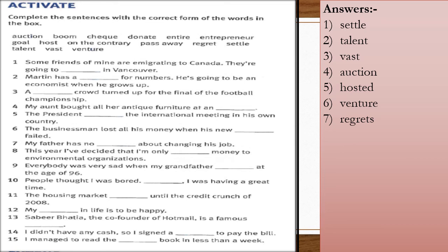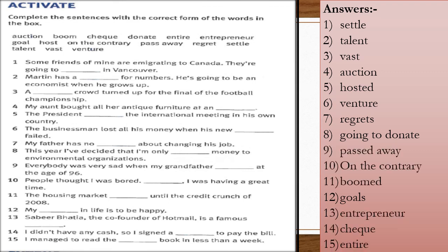Number 8: going to donate. Number 9: passed away. Number 10: on the contrary. Number 11: boomed. Number 12: goals. Number 13: entrepreneur. Number 14: check. Number 15: entire.